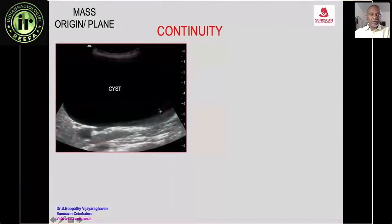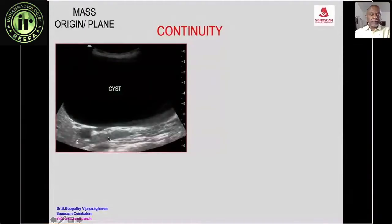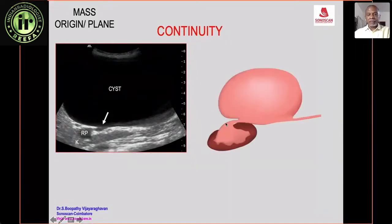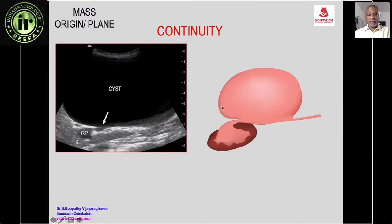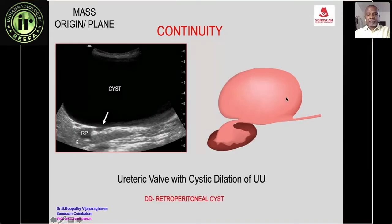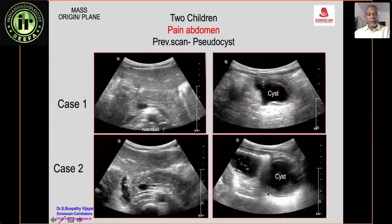A large cyst is seen in the right flank with the kidney and a mildly dilated renal pelvis. There is communication between the renal pelvis and the large cyst. Further imaging shows grossly dilated calyces and pelvis communicating with a hugely dilated upper ureter — consistent with a ureteric valve causing cystic dilatation of the upper ureter. The differential diagnosis is a retroperitoneal cyst.